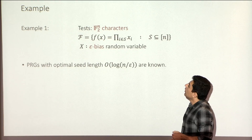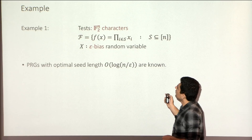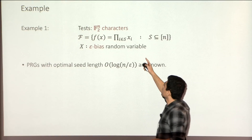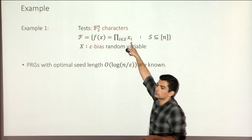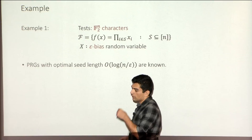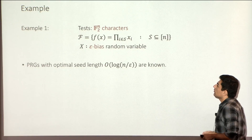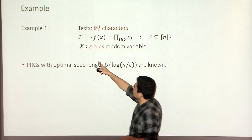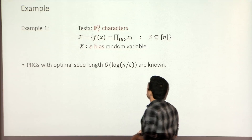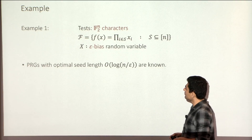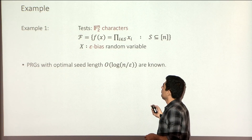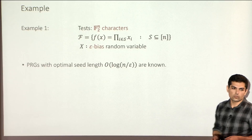For an example, take the class of tests to be all linear characters of F_2^n — that means all multilinear monomials, one for every subset of {1,...,n}. If you have a random variable x that epsilon-fools this class, we call it an epsilon-biased random variable. There are optimal constructions for this, and they take log(n/epsilon) bits.